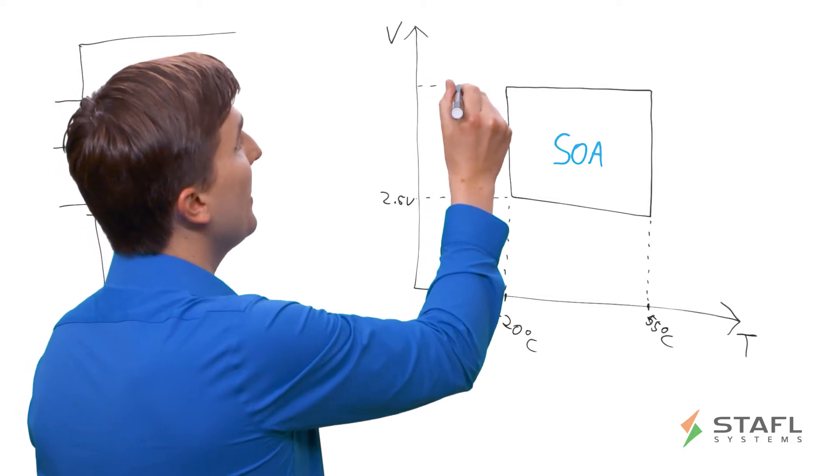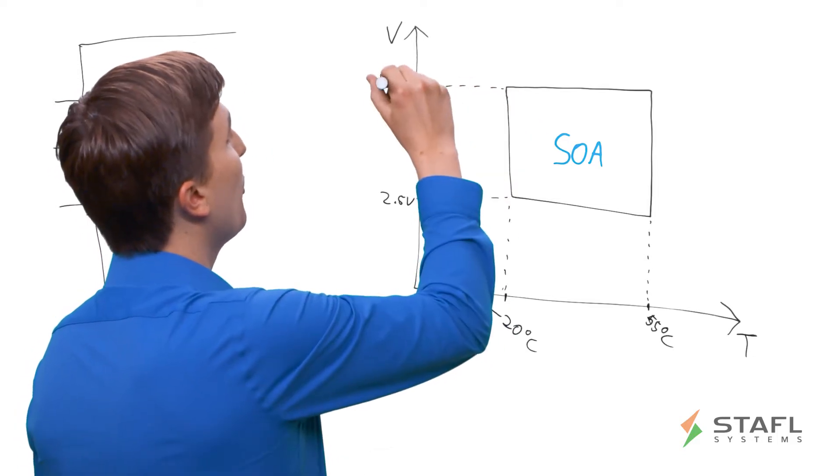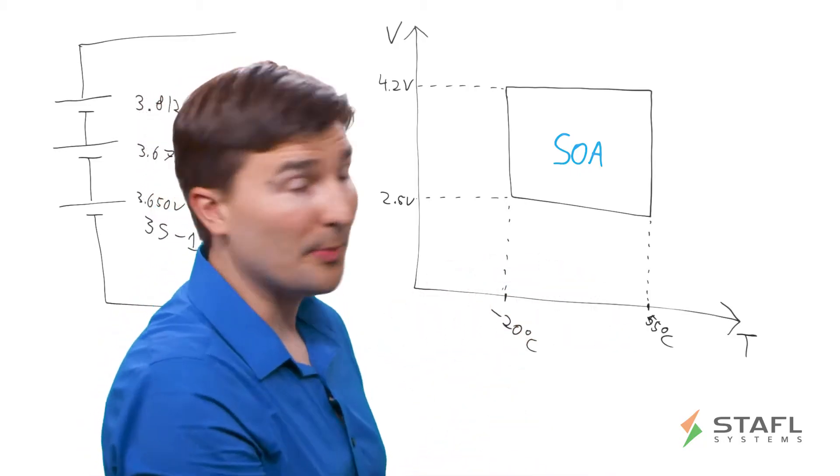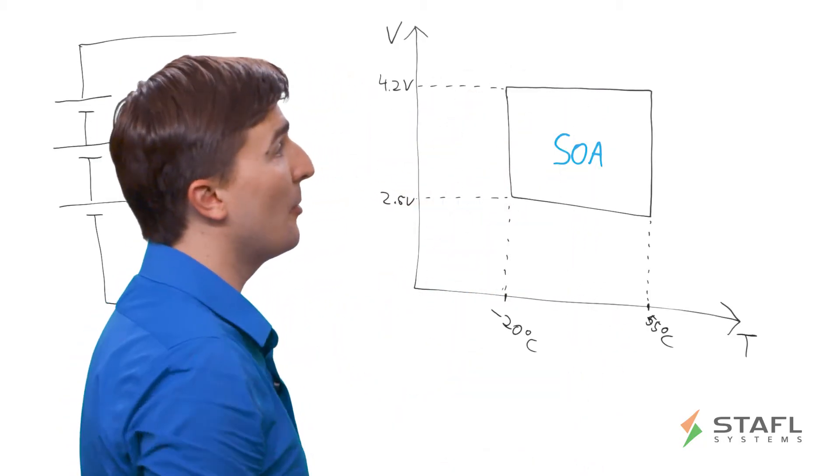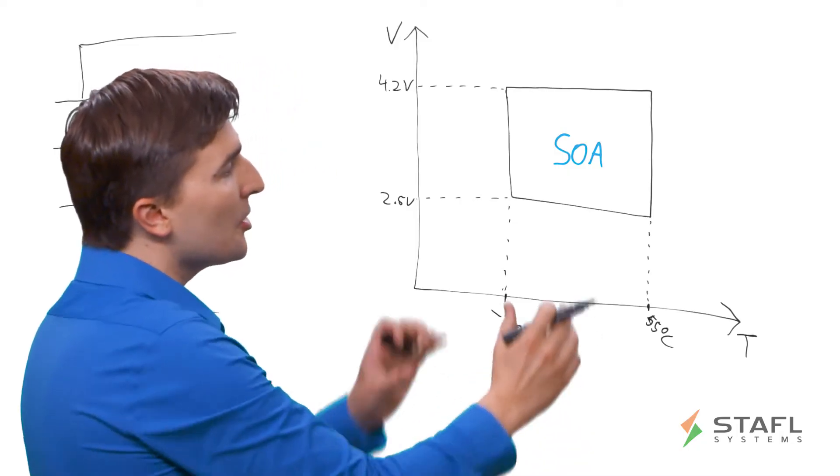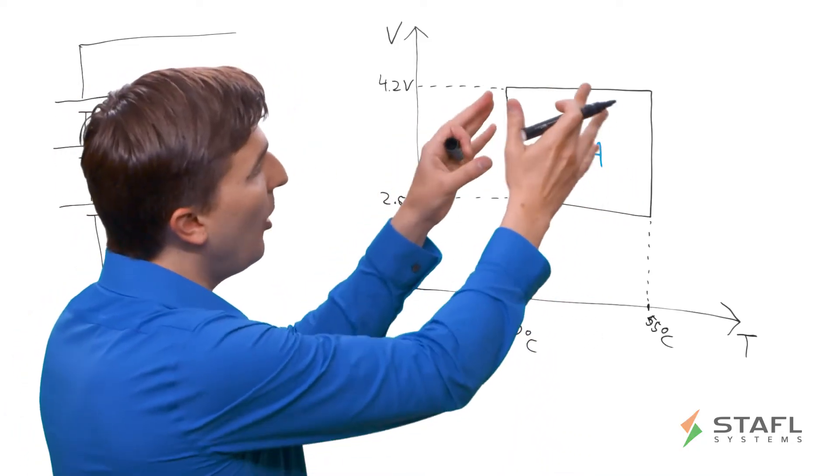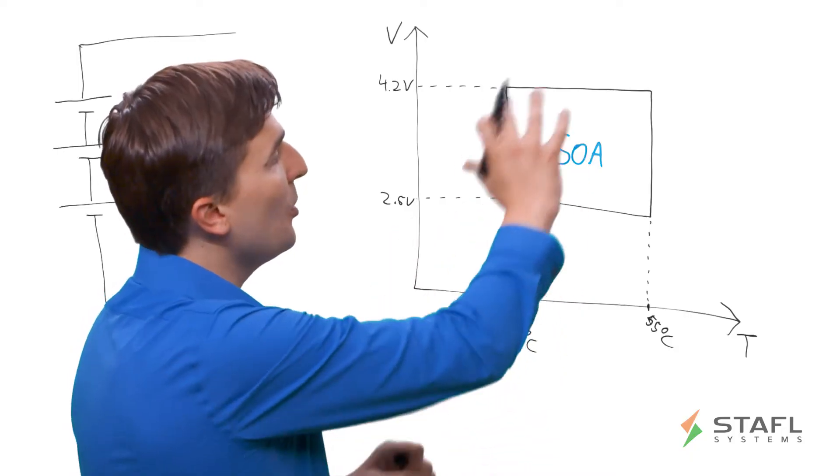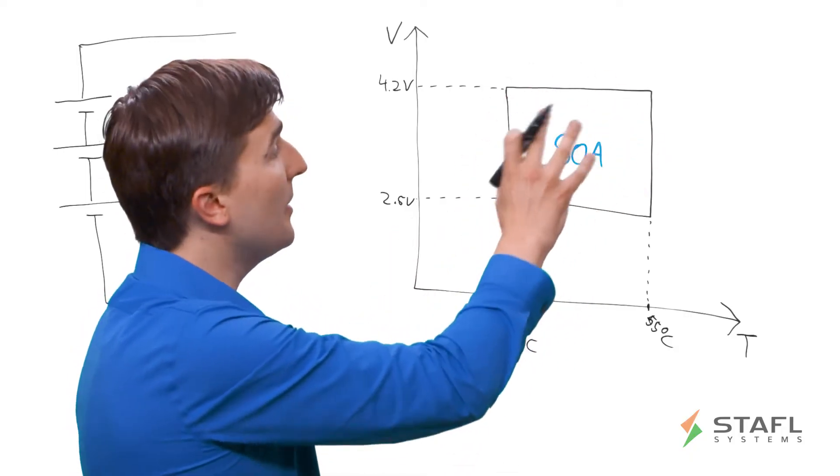And on the high side, we have 4.2 volts, which is also a typical maximum safe or maximum charge voltage for lithium-ion cells. So within this box, you want to keep all of your cells individually within this area to prevent safety events.